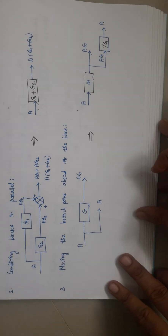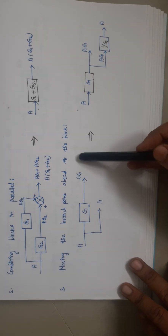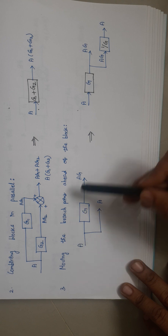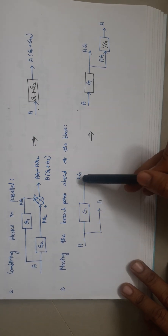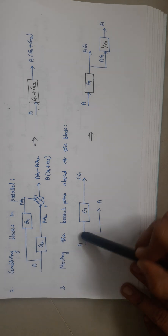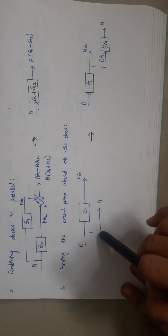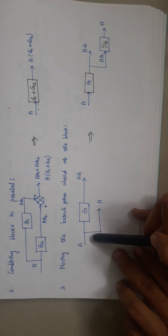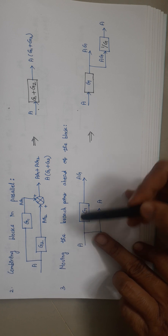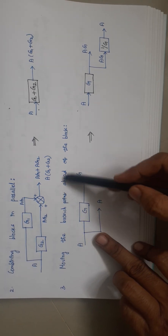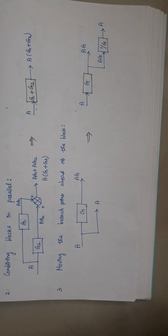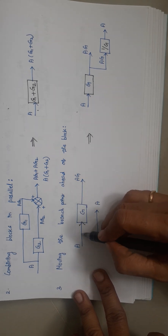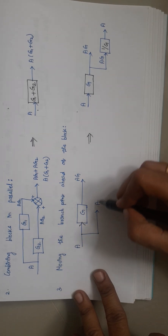The third rule is moving the branch point ahead of the block. Here we have a block G, input A, and respective output A·G. A branch point is a point where we take the signal outward. Now I am going to shift this branch point ahead of the block. The word 'ahead' is used because the flow of signal is in the forward direction.